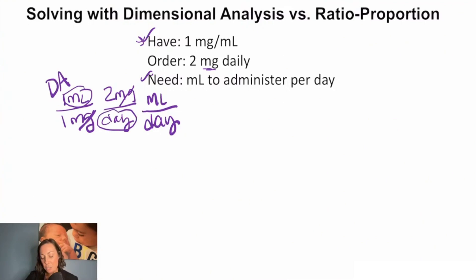So we multiply here just our one times our two, we get two, and of course one times our one. So we see that we'd be giving two milliliters per day.